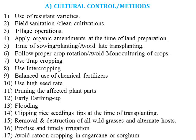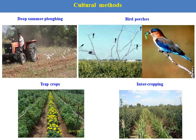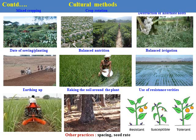Ratoon cropping in sugarcane or sorghum should be managed if the area is affected with pests. With the help of birds, we can control insects very well. Bird perches can be implemented in the field. Trap crops such as marigold intercropped with vegetables, and intercropping with cowpea and tur, are very important trap crops. Date of sowing and transplanting can be harmonized. Balanced nutrition should be given, and excess use of chemicals should be avoided. The early earthing-up operations also play an important role in pest management through cultural methods.